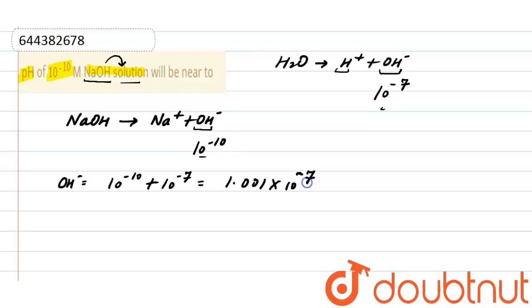Now here, as we know, pOH equals minus log of OH- ion. Putting the value here: minus log of 1.001 × 10 raised to the power minus 7.